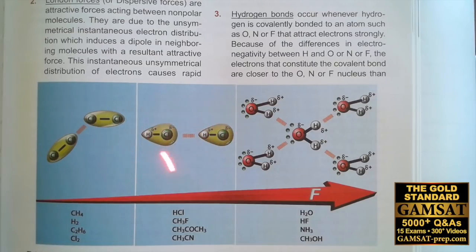The diagram also shows dipole-dipole forces. And this is also due to an unequal sharing of electrons in a covalent bond. So here between hydrogen and chlorine, because chlorine is more electronegative. But because chlorine is not as electronegative as oxygen, nitrogen, and fluorine, these bonding between different molecules are not called hydrogen bonds because they are not as strong.